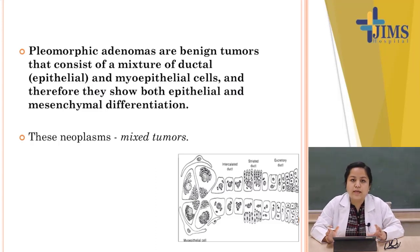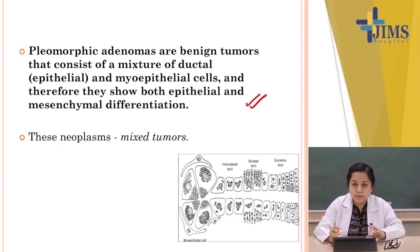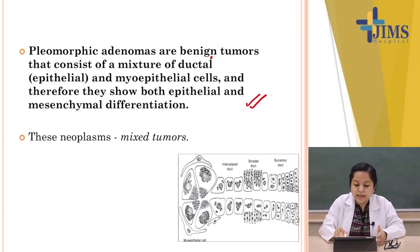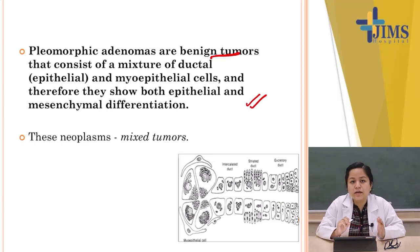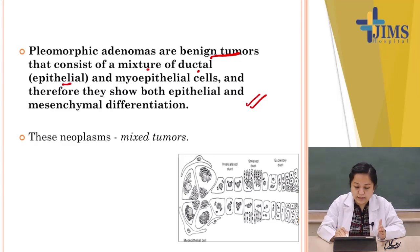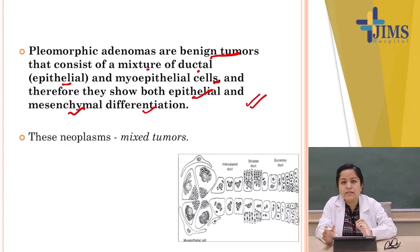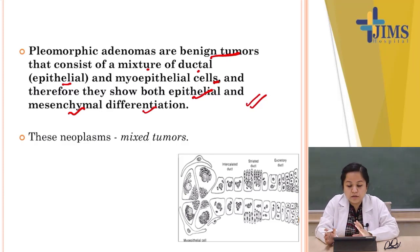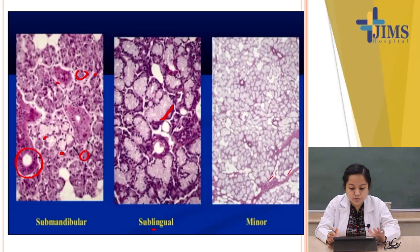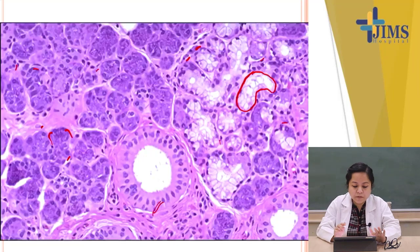Now coming to the main topic: pleomorphic adenoma. By definition from Robbins, they are benign tumors composed of a mixture of ductal (epithelial) and myoepithelial cells, which is why they show both epithelial and mesenchymal differentiation. Simply remember it is a mixed tumor with both epithelial and myoepithelial components.